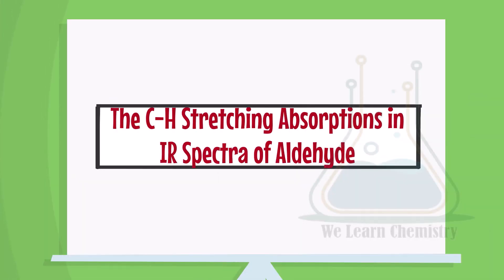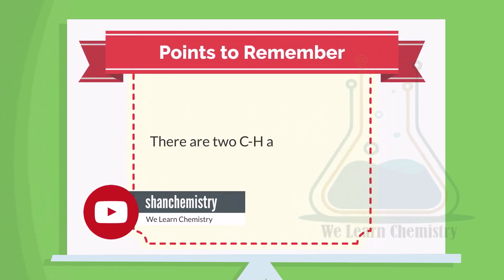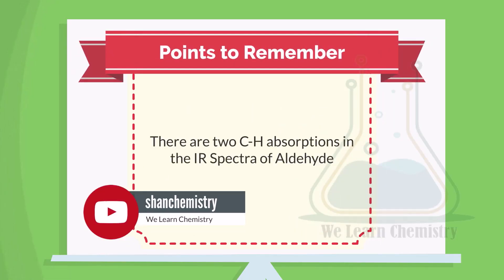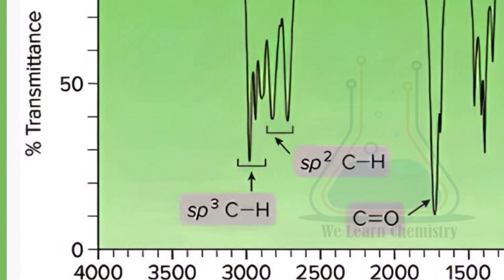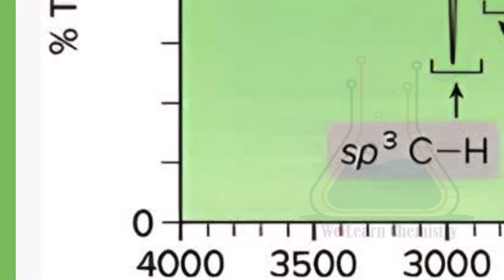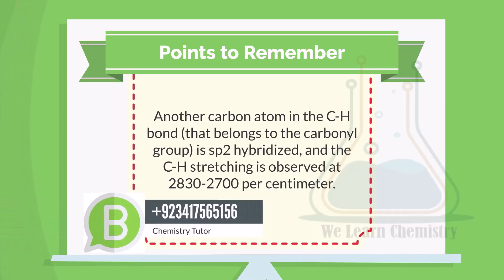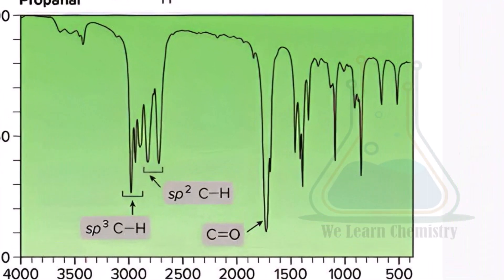The CH stretching absorptions in IR spectra of an aldehyde — points to remember. There are two CH absorptions in the IR spectra of an aldehyde. One carbon atom belonging to the alkyl group is SP3 hybridised, and the CH stretching is observed at 3000 to 2800 per centimetre. This peak is unimportant because it is observed at the same wave number for many other compounds. Another carbon atom in the CH bond belonging to the carbonyl group is SP2 hybridised, and the CH stretching is observed at 2830 to 2700 per centimetre. This is the unique absorption in aldehydes that helps us differentiate aldehydes from ketones and other compounds.